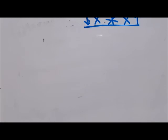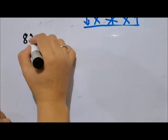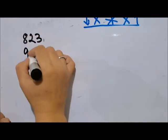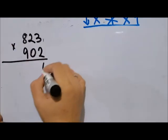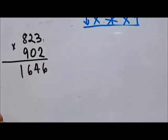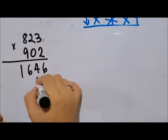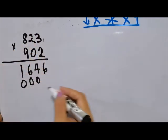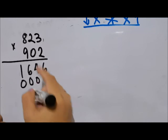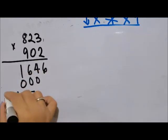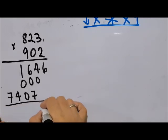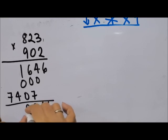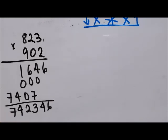Another example: 823 times 902. The traditional way: 2 times 3 is 6, 2 times 2 is 4, 2 times 8 is 16. Next, 0, so this will be all zeros. Next is 9: 9 times 3 is 27, 9 times 2 is 18, 9 times 8 is 72. Then we add: bring down 6, 4, 3, 2, 4, and 7. That's the traditional way.